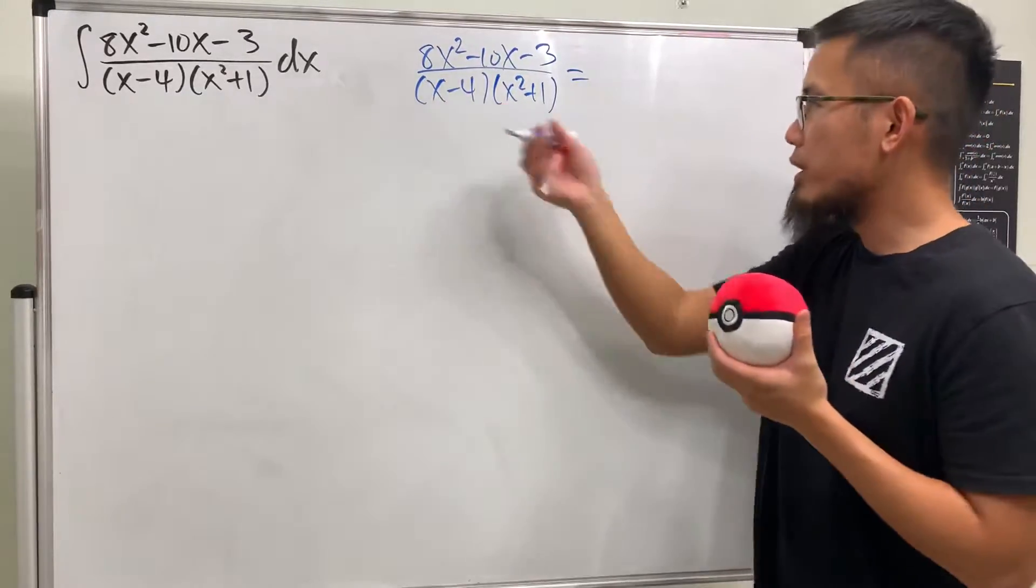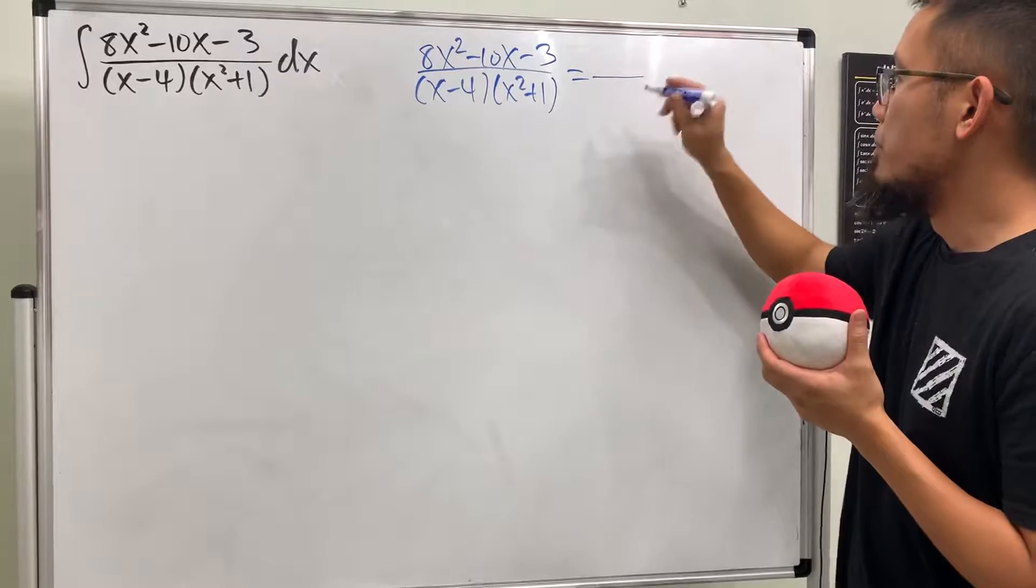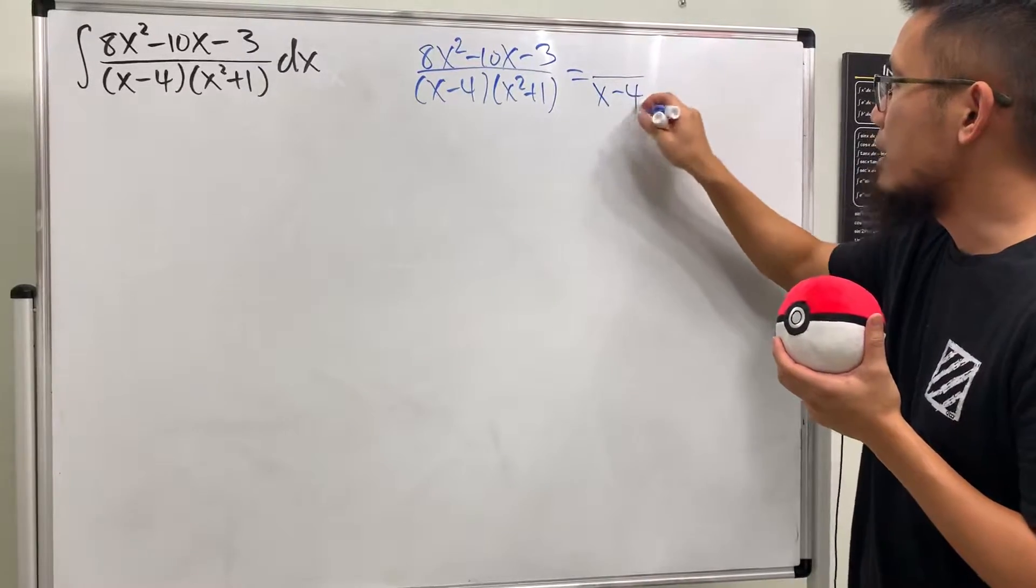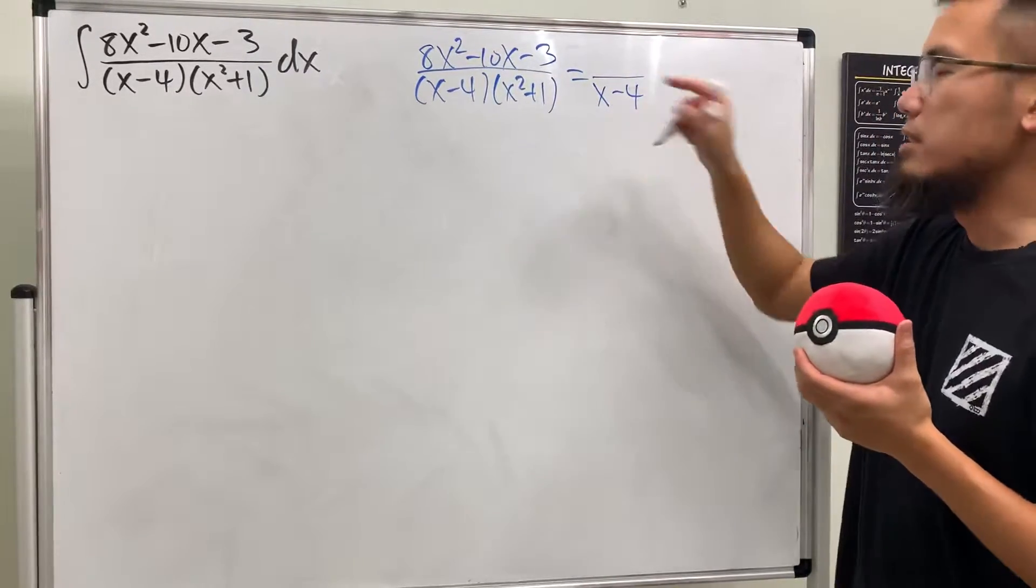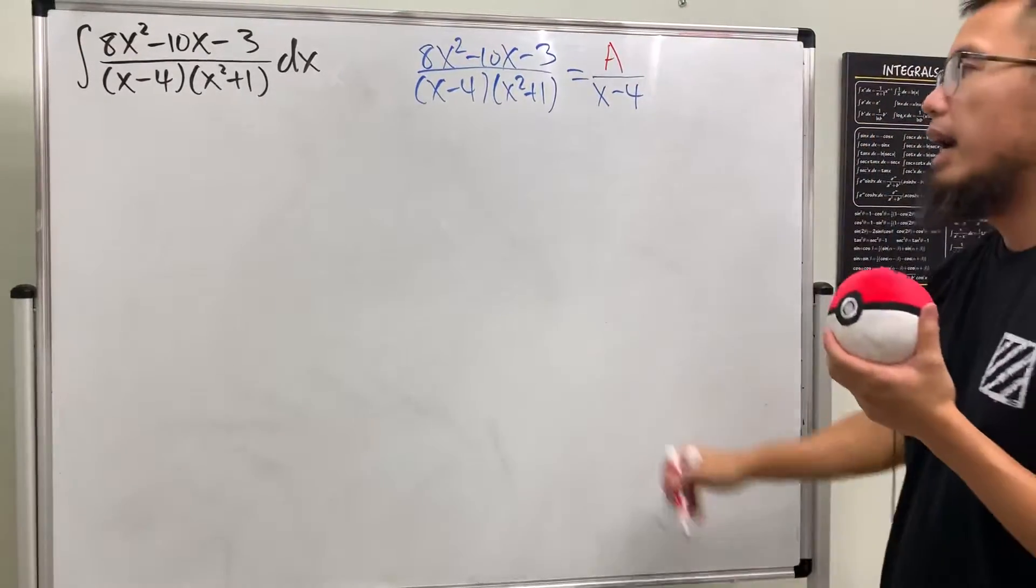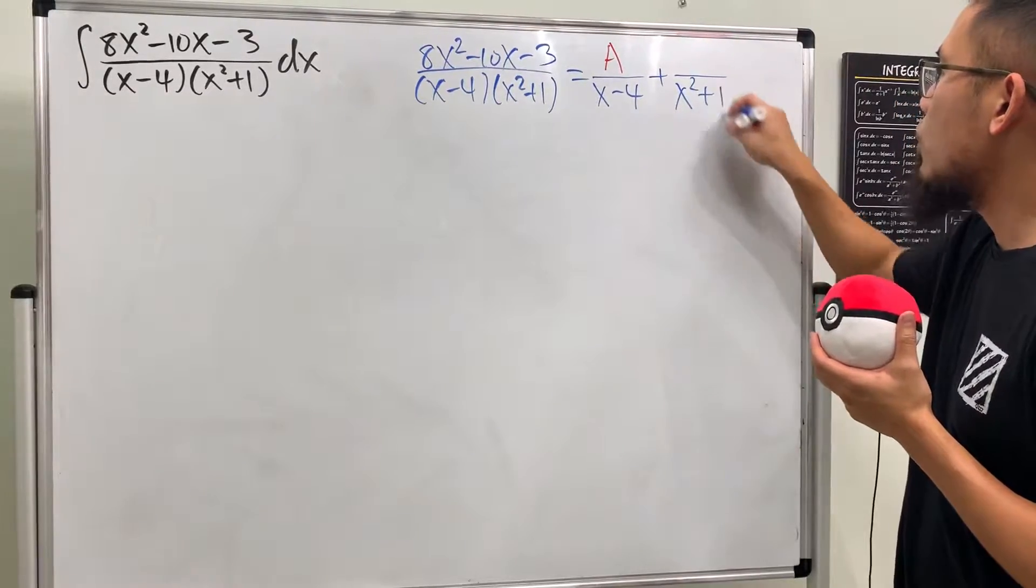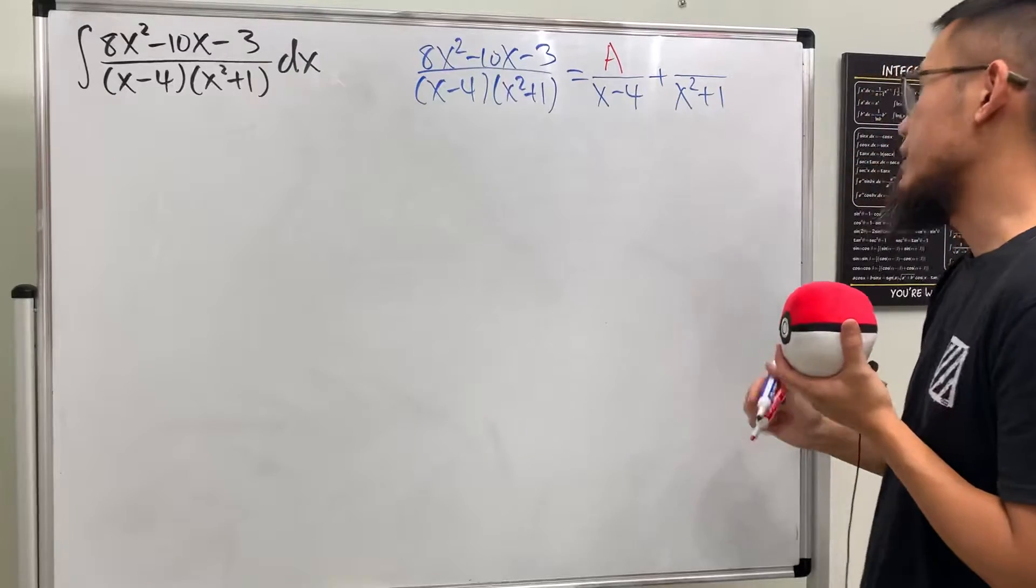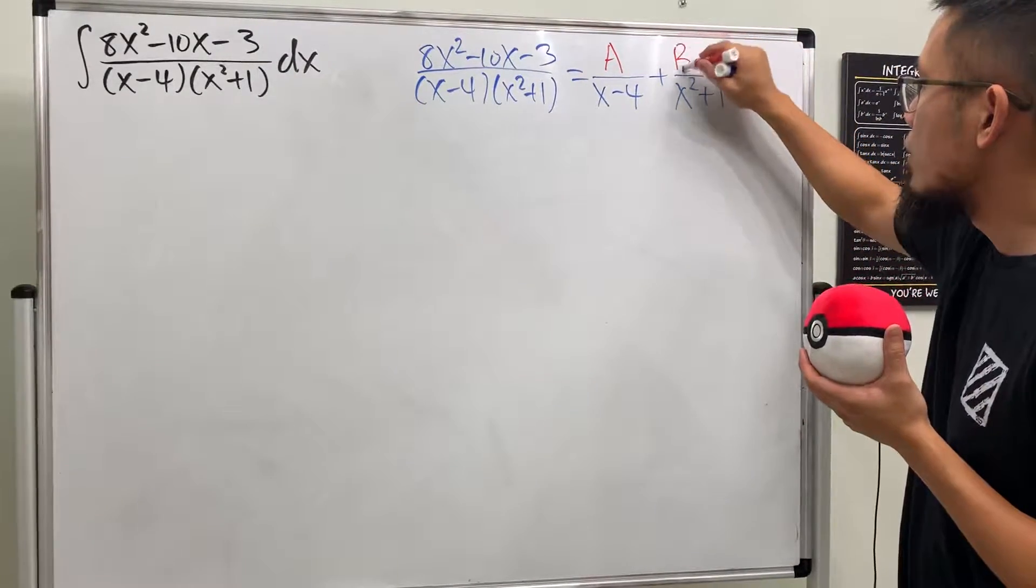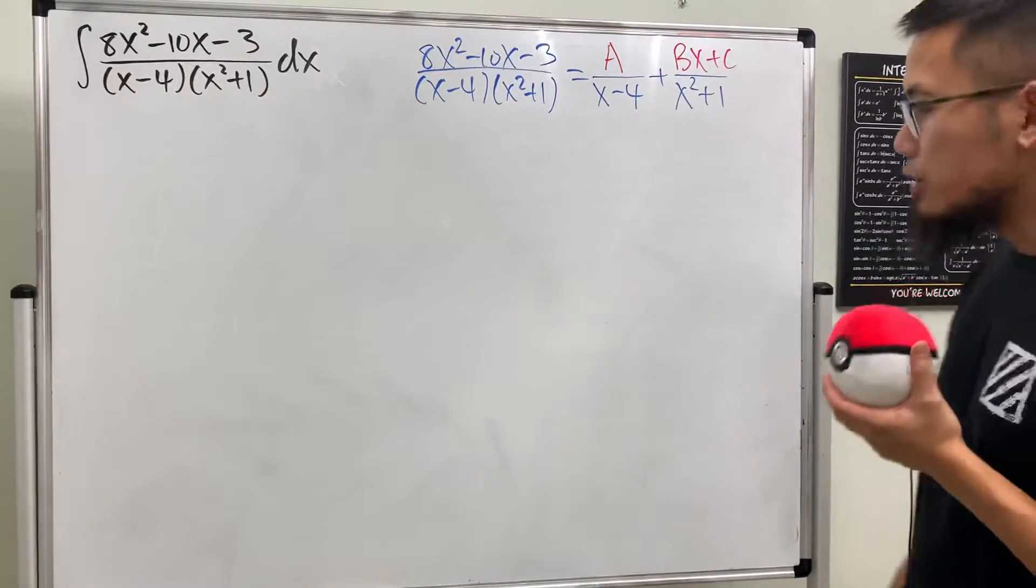We can break this down into two smaller fractions. The first one we have A over x - 4 on the bottom, and because this is just linear, on the top we just need a constant. For the second one we will have x² + 1, but this is an irreducible quadratic, that means the top is just going to be linear, so Bx + C.